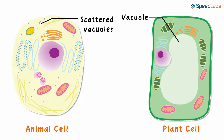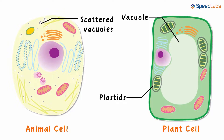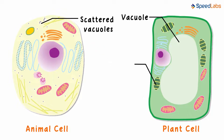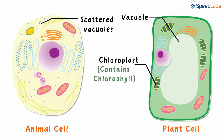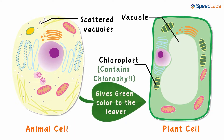Also, in the plant cell there are several colored bodies. Do you know what they are called? They are known as plastids. These are absent in animal cells. Look at this plastid in the plant cell — it's called the chloroplast and it contains chlorophyll. This pigment gives the green color to the leaves, and plants require chlorophyll for the process of photosynthesis.